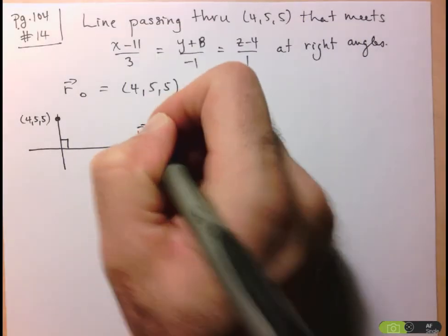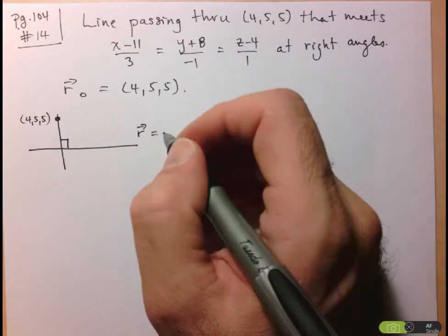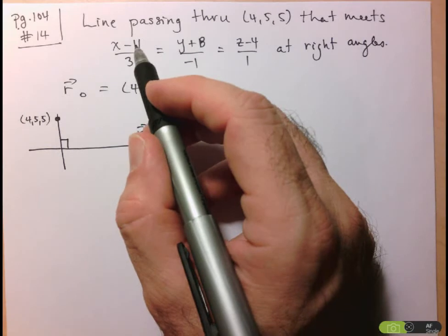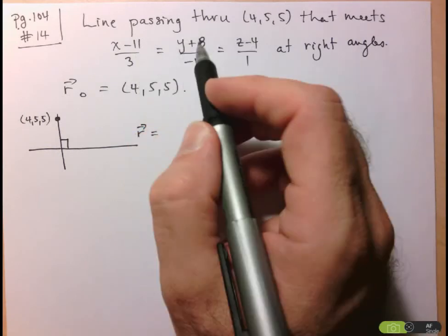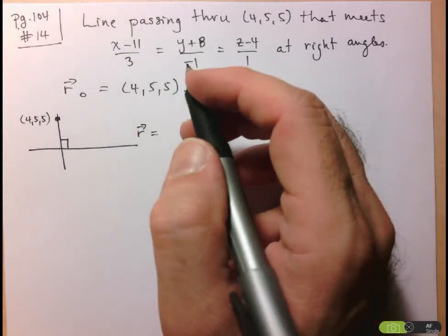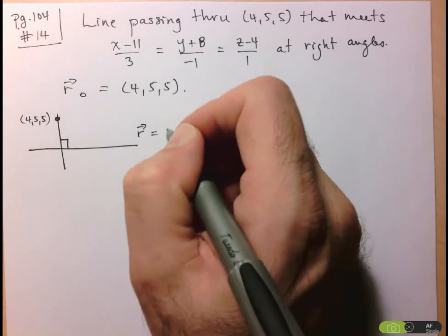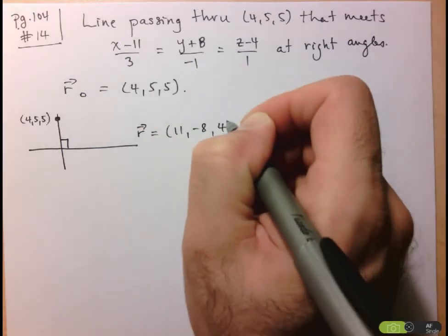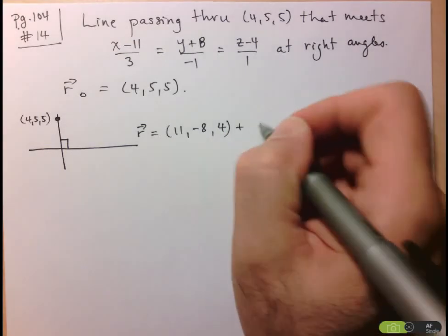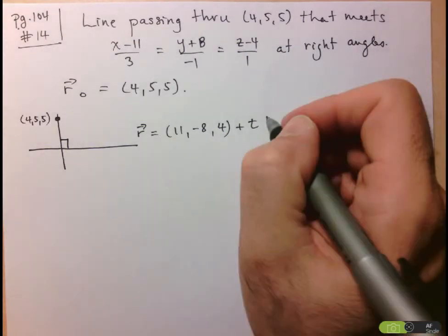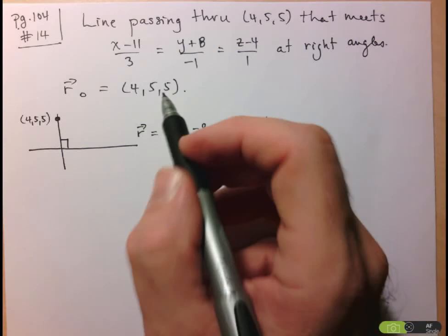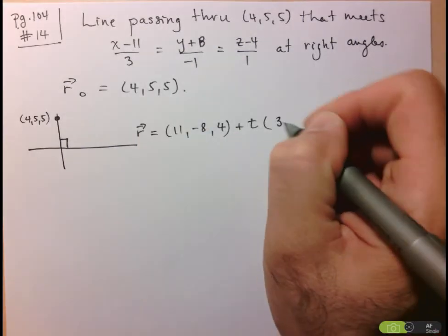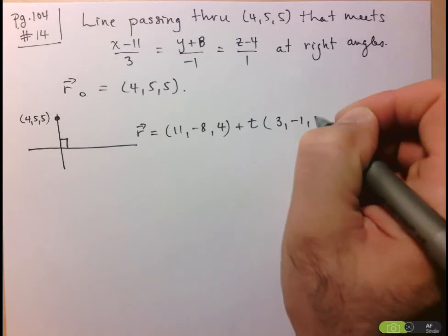In vector form, R equals R-naught. The given point from the symmetric form is in the numerators: (11, -8, 4). Then plus parameter t times the direction vector, found in the denominators: (3, -1, 1). So my direction vector m is (3, -1, 1).